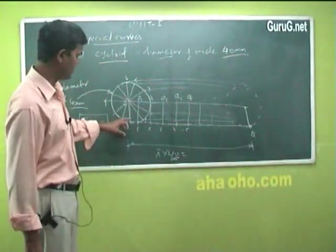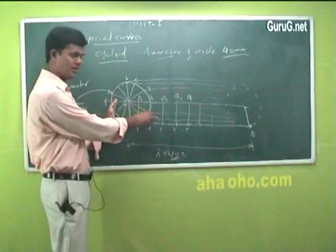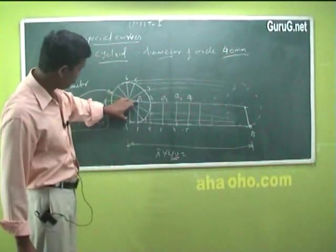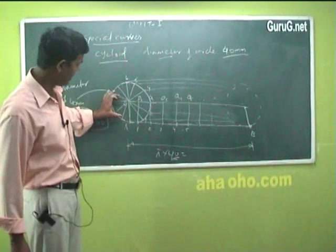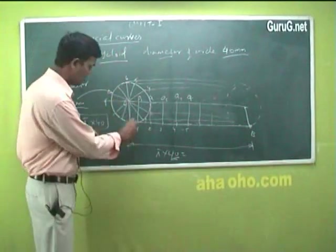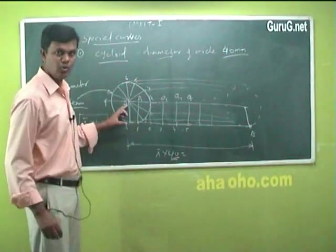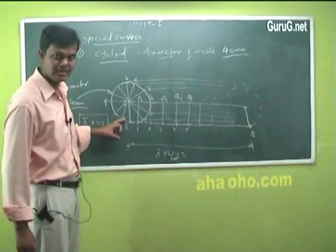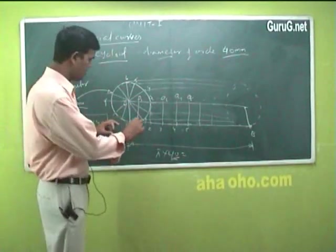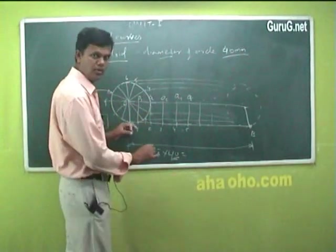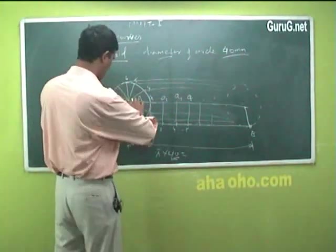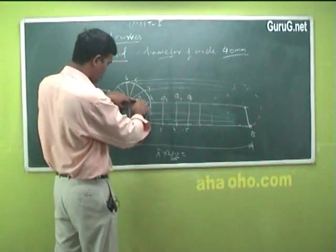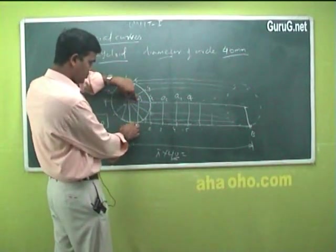Now, from O1 as center and OA as radius — OA being the radius of the circle, 20 millimeters — you draw an arc. This arc will cut the horizontal line corresponding to point 1. You should cut that horizontal line, because that is where the tracing point falls after the first subdivision of rolling.